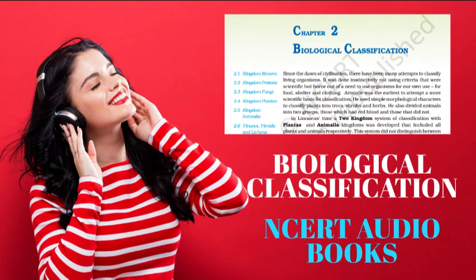Topic 2.2.4 Slime Molds. Slime molds are saprophytic protists. The body moves along decaying twigs and leaves engulfing organic material. Under suitable conditions, they form an aggregation called plasmodium, which may grow and spread over several feet. During unfavorable conditions, the plasmodium differentiates and forms fruiting bodies bearing spores at their tips. The spores possess true walls. They are extremely resistant and survive for many years even under adverse conditions. The spores are dispersed by air currents.